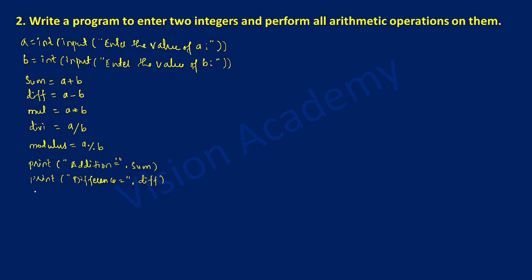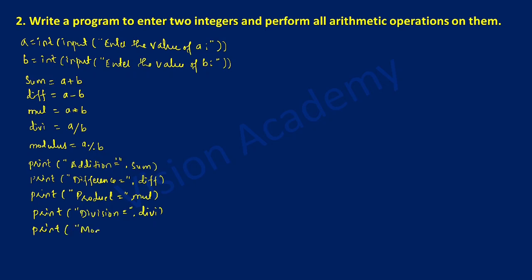Next we will go for printing multiplication, that is the product of these two numbers. Once again I am going to write print, and in double quotation marks write 'product is equal to', end the double quotation mark, and write mul. Now we will go for division — print, and in double quotation marks write 'division is equal to', then write the variable name divi. Last one — print and write 'modular division is equal to', put a comma, then write the variable called modulus and close the bracket.